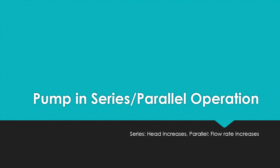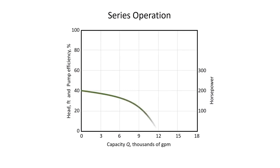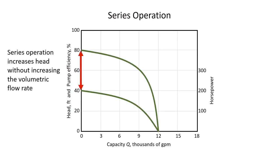What will happen if we add two pumps in series and what will happen if we add two pumps in parallel? If we add two pumps in series, the head increases. Whereas when we connect two pumps in parallel, the flow rate increases and the head remains the same. In series operation, one pump discharges into the suction of another, resulting in an increase in head but no increase in flow rate.